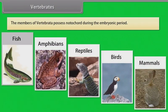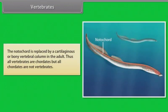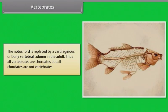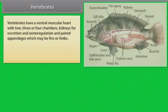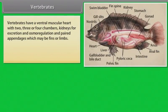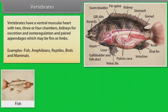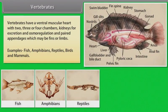Vertebrates. The members of Vertebrata possess notochord during the embryonic period. The notochord is replaced by a cartilaginous or bony vertebral column in the adult. Thus, all vertebrates are chordates but all chordates are not vertebrates. Vertebrates have a ventral muscular heart with two, three or four chambers, kidneys for excretion and osmoregulation, and paired appendages which may be fins or limbs. Examples: Fish, Amphibians, Reptiles, Birds and Mammals.